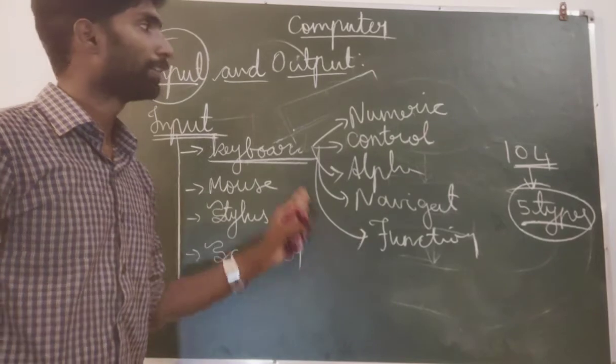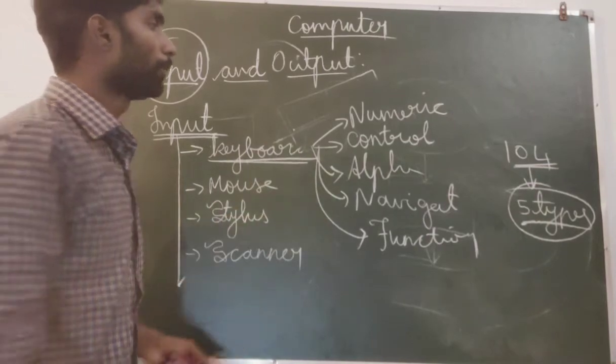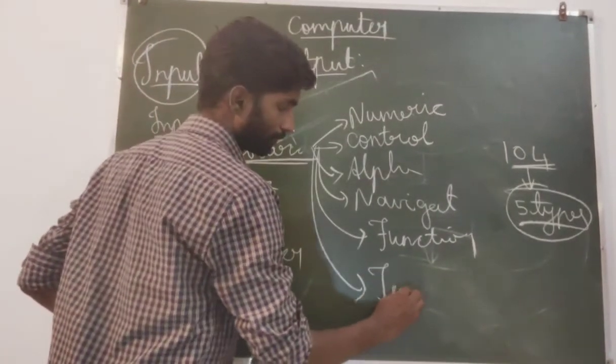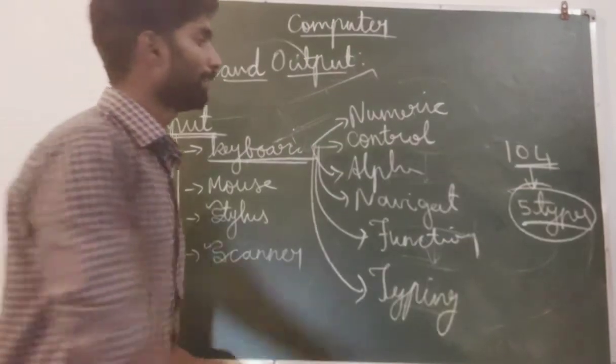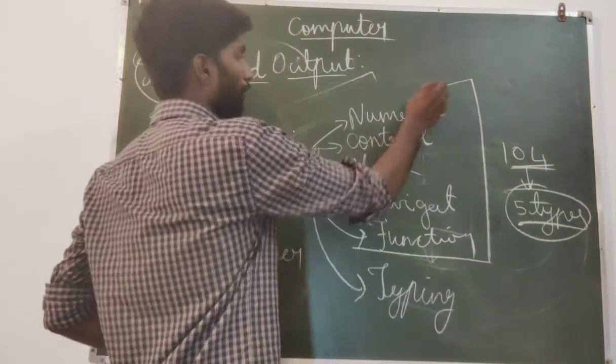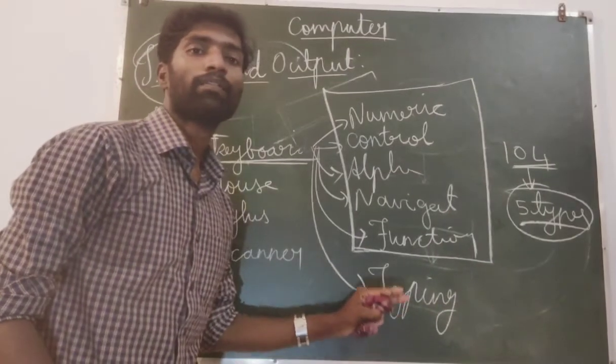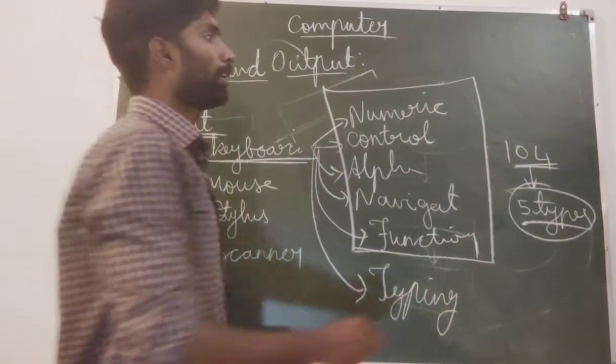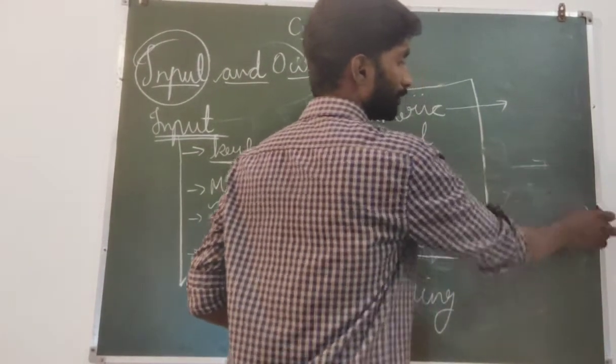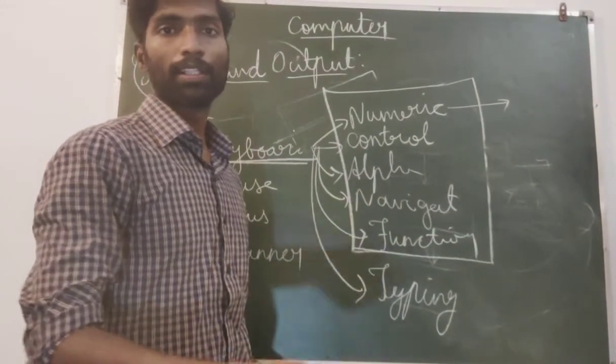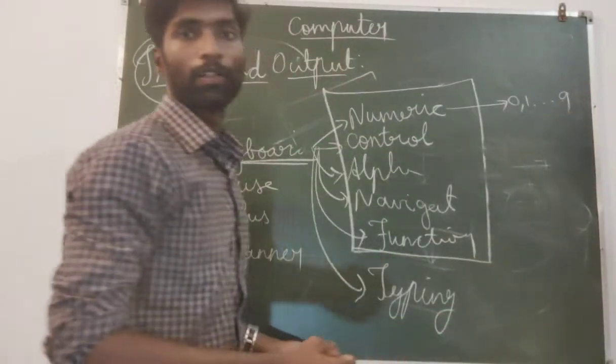So these are the mainly 5 types of keys available in a keyboard. Now what are the numeric keys? Simple numbers. What are the numbers? 0, 1, 2, 3, up to 9. Zero to 9 is called numeric keys.